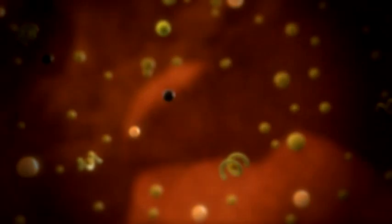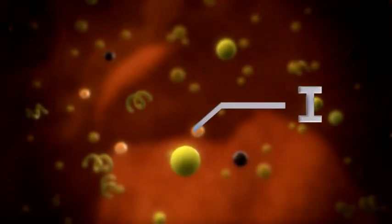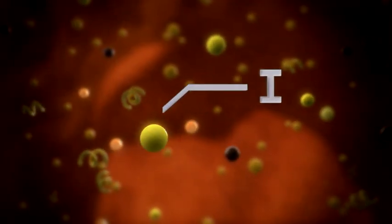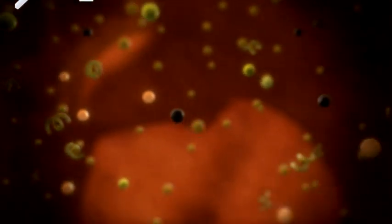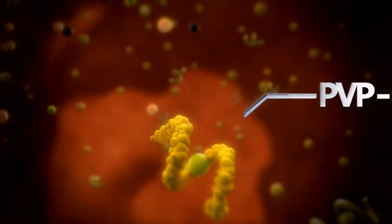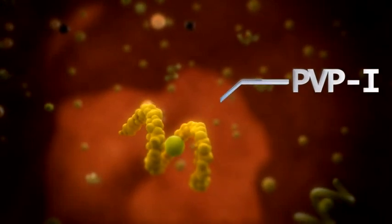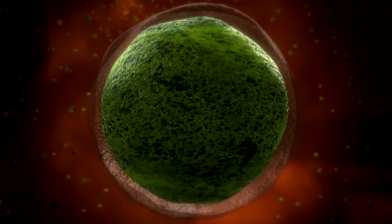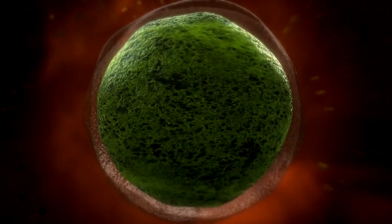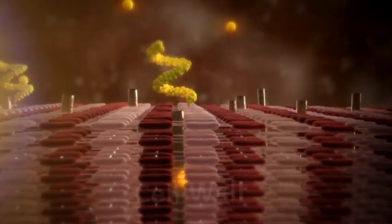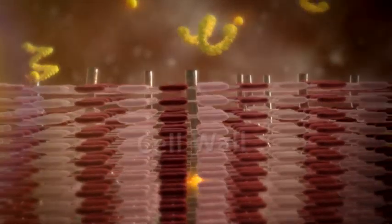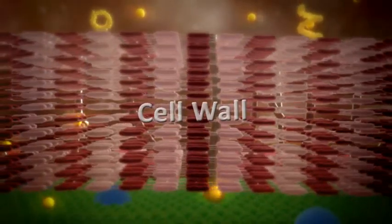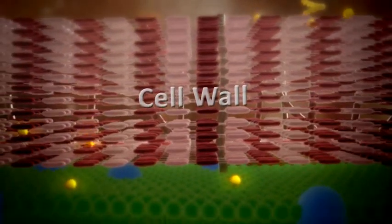Povidone-iodine, the active ingredient in betadine, is a molecule composed of povidone and iodine. The povidone carries the iodine to the specific binding site of the pathogen. A fraction of the iodine will be released as free iodine, and these free iodine are delivered directly to the cell wall or membrane of the pathogen.